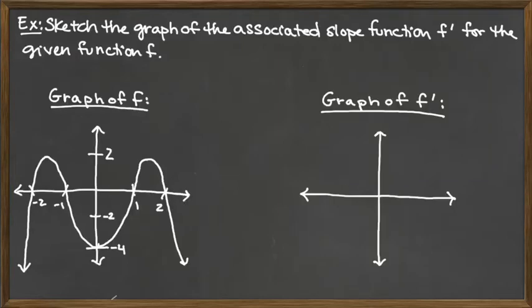To begin, we want to look at the graph of a function f that's given and sketch the graph of that function's derivative. When we're reading this set of directions, it says sketch the graph of the associated slope function. We have no wiggle room – whatever the function is, it has a particular derivative and we want to know what its graph is. What we're going to do is utilize key observations on the graph of f to get this correct for our graph of f prime.